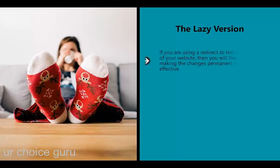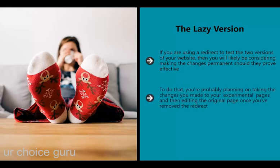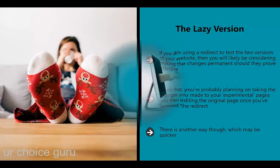The lazy version: if you're using a redirect to test two versions of your website and they prove effective, you're probably planning on taking the changes from your experimental pages and editing the original once you've removed the redirect. There is another way that may be quicker: simply make the redirect permanent. You can do this with a redirect, but note that using a 301 redirect from your .htaccess file will risk losing 10% of your link equity. To prevent this from happening, use a JavaScript or PHP redirect instead.